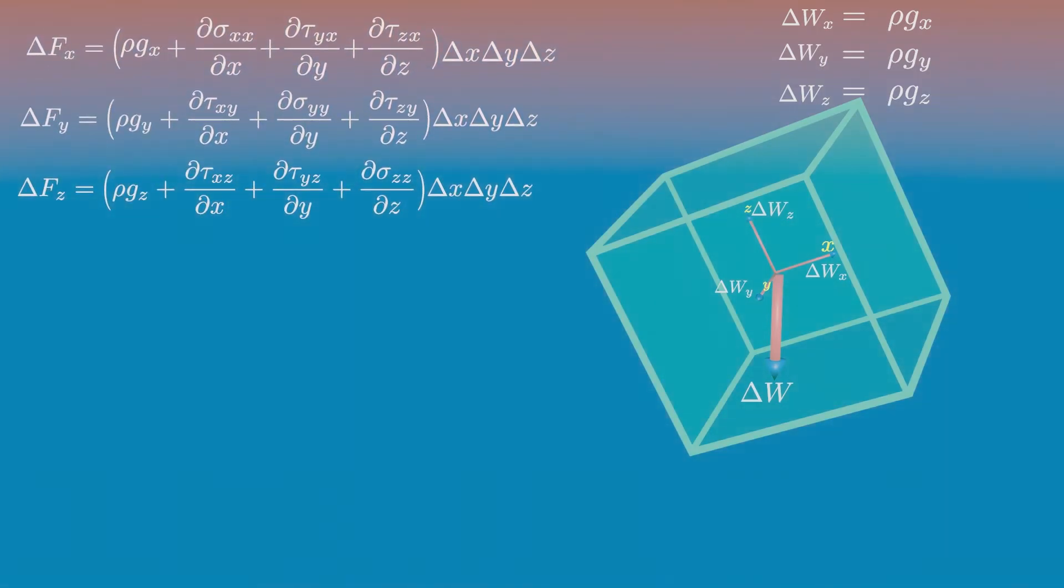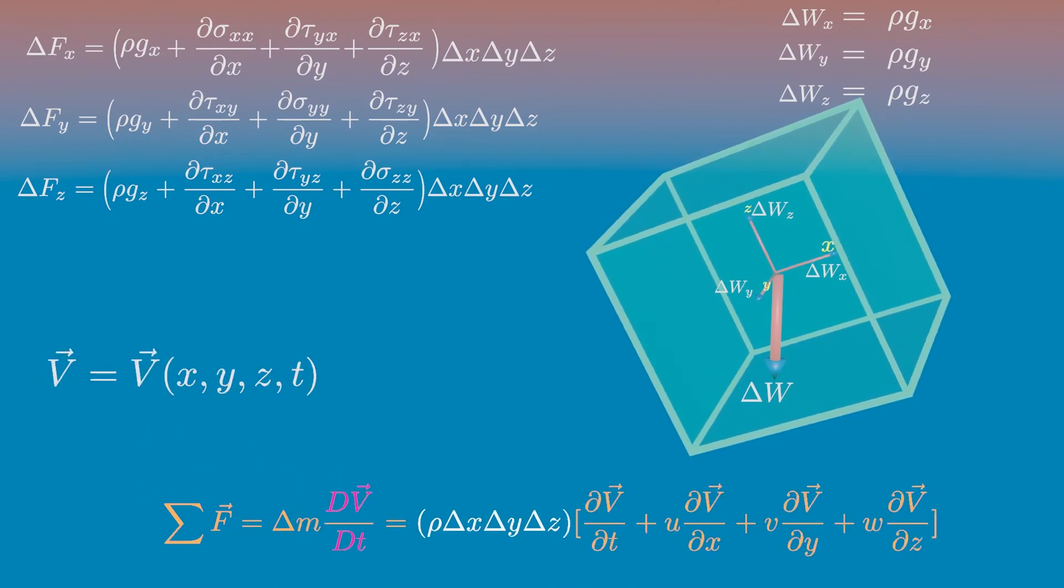With these forces established, we can now apply Newton's second law of motion to the particle. Provided the particle's velocity is expressed as a velocity field. Then the material derivative is used to determine the acceleration. Thus...